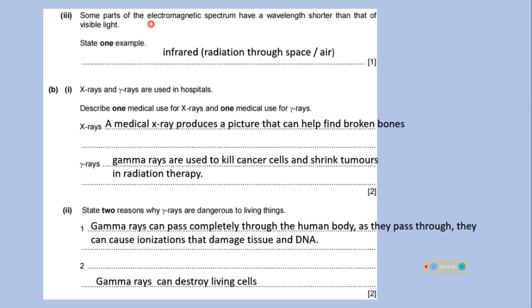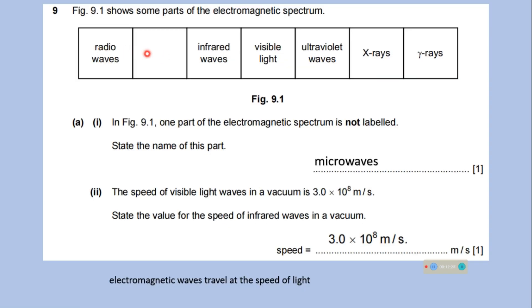Some parts of the electromagnetic spectrum have a wavelength shorter than that of visible light. State one example. It is ultraviolet spectrum. As this spectrum is in increasing order of wavelength, ultraviolet you can write here.